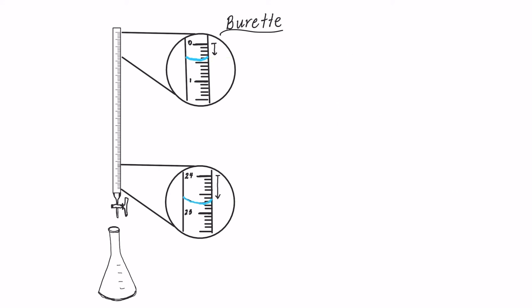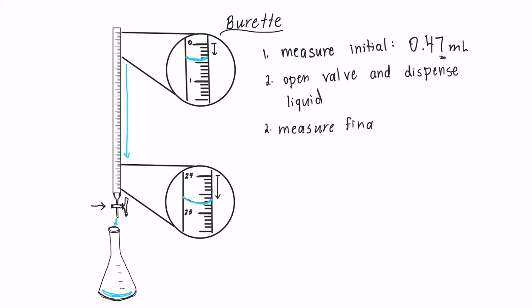Let's go over these steps one more time. So first we measured the initial volume. In this example, it was 0.47 milliliters. Then we opened the valve and dispensed a certain amount of liquid into the flask. And then we measured the final volume, 24.78 milliliters.